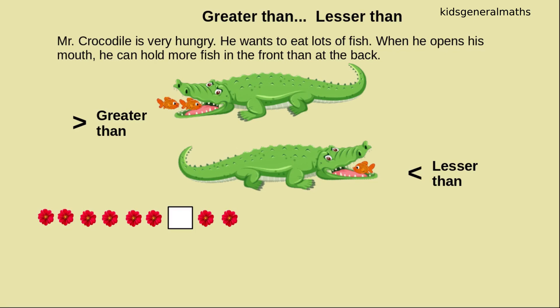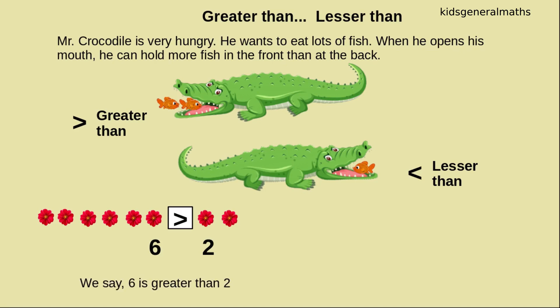Here we are going to count these flowers. One, two, three, four, five, six. How many flowers? Six flowers. One, two. How many flowers? Two flowers. While comparing these two numbers, which number is greater? Yes, six is greater. So the crocodile will open the mouth towards six. So we will say six is greater than two.